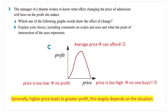Moving on, the next question I picked was question three. The manager of a theatre wishes to know what effect changing the price of admission will have on the profit she makes. The answer is C, but we need to explain our choice.